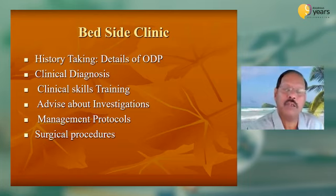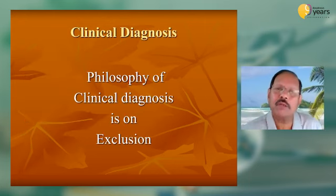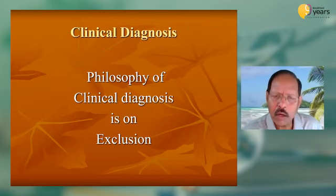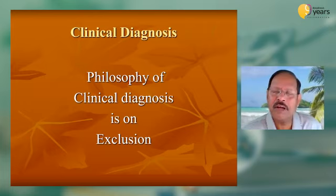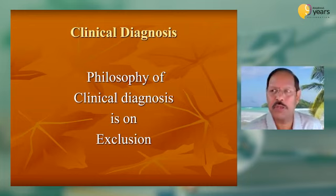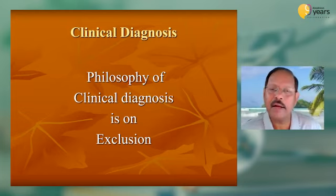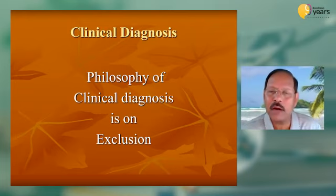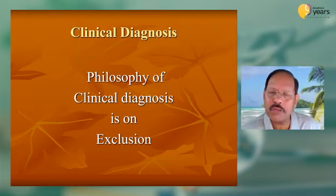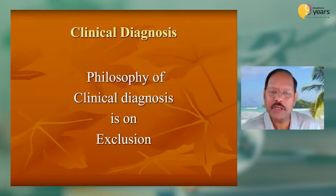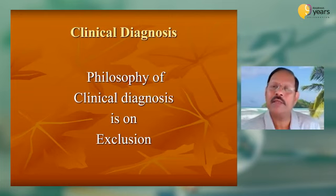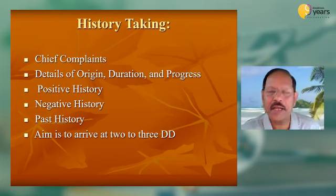The bedside clinic starts from history taking through to a surgical procedure and post-operative outcome. In clinical diagnosis, the philosophy is one of exclusion. The patient comes and narrates the history — before that, anything is possible. As he describes his complaints, the field narrows. We go on asking positive and negative questions, and details of onset, duration, and progress, progressively excluding disease. At the end of history, if you take a perfect history, you should be able to come to two or three diagnoses, which can then be confirmed by investigation.